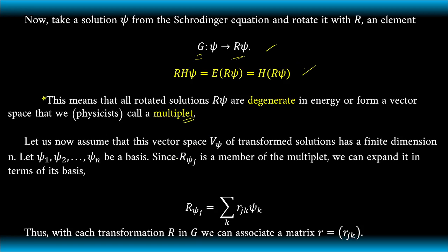Let us now assume that this vector space V𝜓 of transformed solutions has a finite dimension n. Let 𝜓₁, 𝜓₂, up to 𝜓ₙ be a basis. Since R𝜓ⱼ is a member of the multiplet, we can expand it in terms of its basis. So, if we are going to get the mathematical representation or mathematical notation for this one, we have R sub 𝜓ⱼ is actually equal to this summation, which basically is equal to the sum of rⱼₖ times 𝜓ₖ.